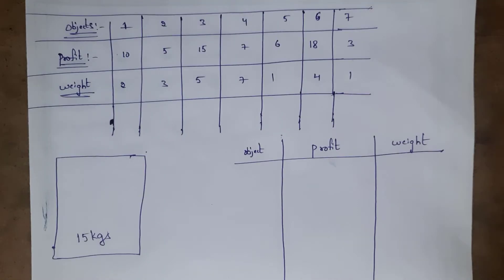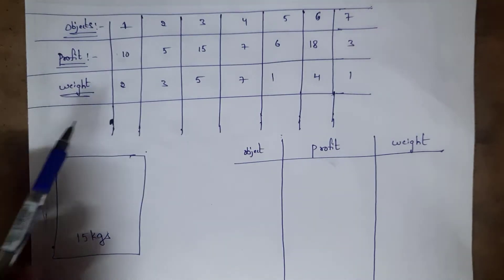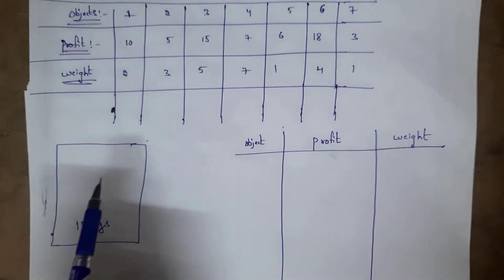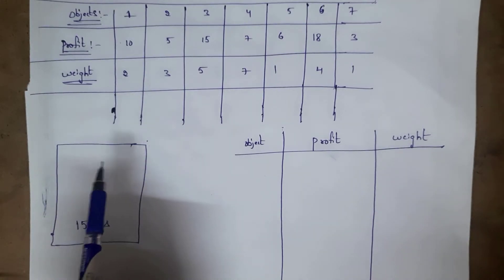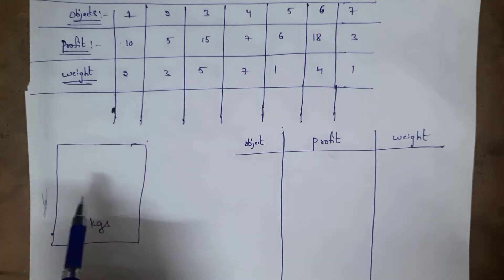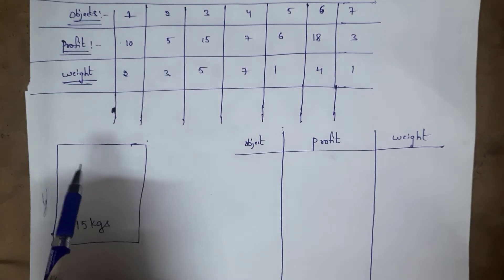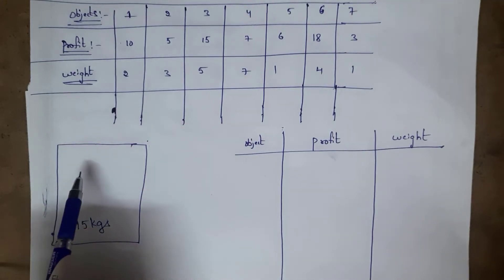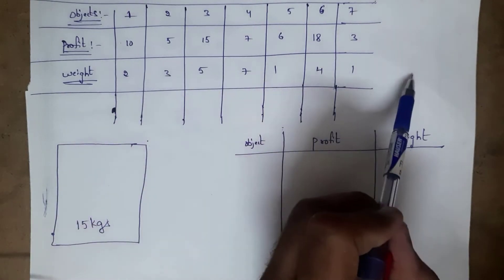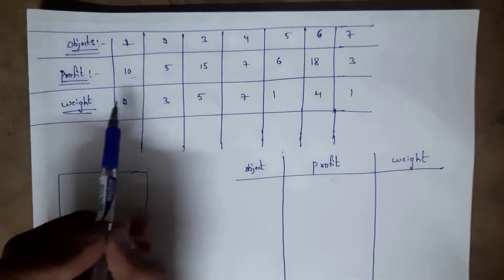In this example there are seven objects, and for each object there is a profit and weight associated with it. There is a 15 kg bag, and I need to place items such that the total weight does not exceed 15 kg. If I place all items the total weight will exceed 15 kg, so I need to select only items with the highest profit.